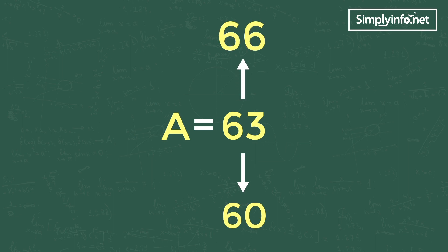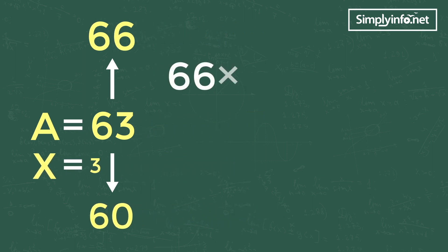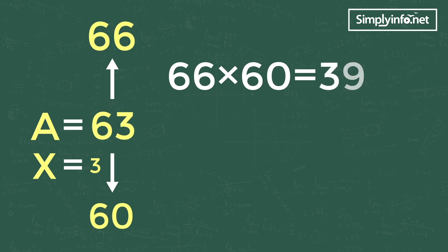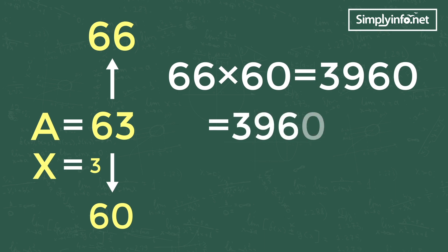The difference between 63 and 60 is 3, so our X value is 3. Now multiplying 66 with the easy number 60 we get 3960. By adding 3 square to 3960 gives you the answer, which is 3969.